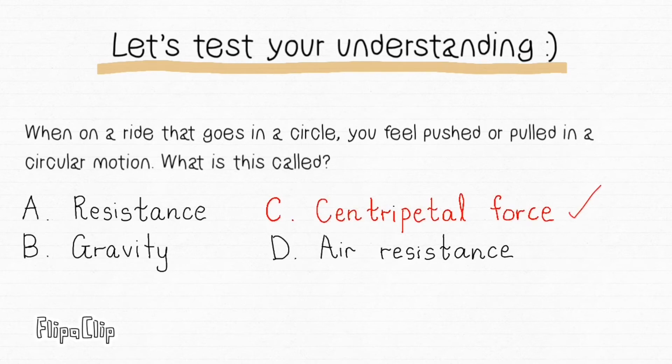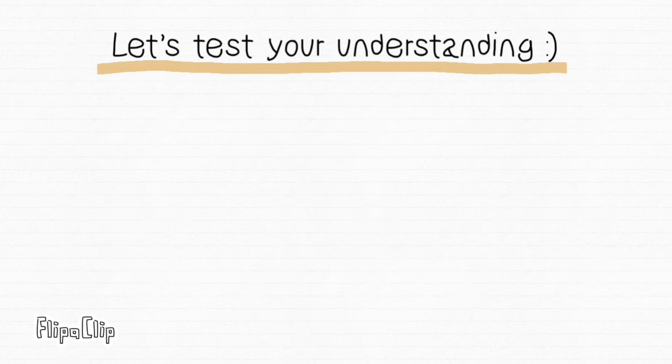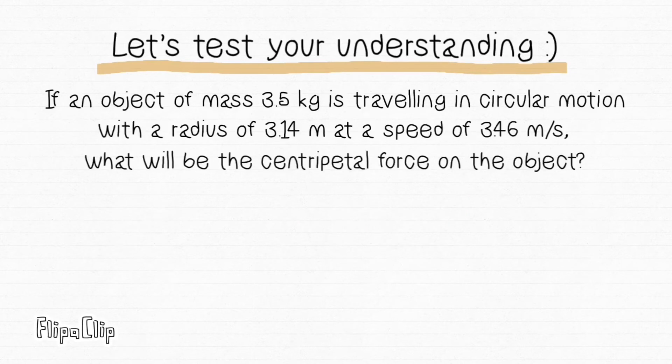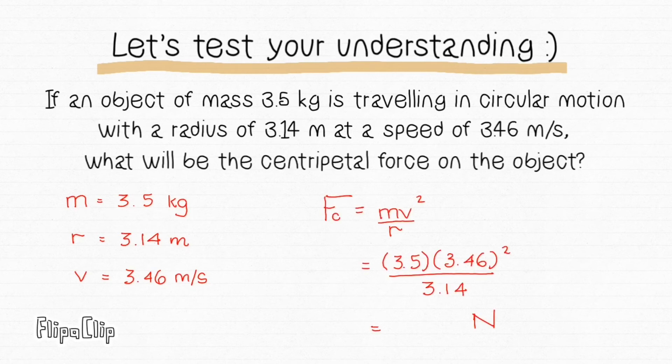The next question is, if an object of mass 3.5 kg is travelling in circular motion with a radius of 3.14 meter at a speed of 3.46 meter per second, what will be the centripetal force on the object? Listing down all the mass, radius and velocity, and substituting them into the formula of MV square over R, your answer should be 13.34 Newton.